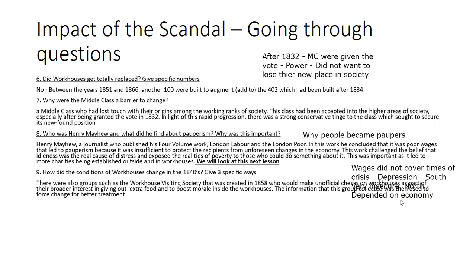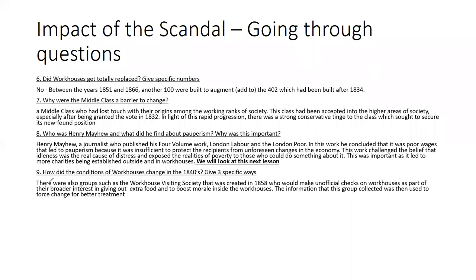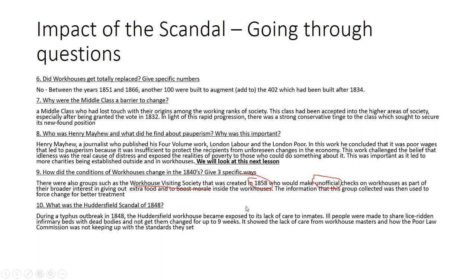How did conditions in the workhouse change because of the scandal? Groups such as the Workhouse Visiting Society, created in 1858, made unofficial checks on the workhouse as part of a broader interest in giving out extra food and boosting morale. They ensured people were being treated properly, and if not, things could be reported. They were unofficial, but nevertheless a set of eyes making sure things were right. The information this group collected was used to force change for better treatment.